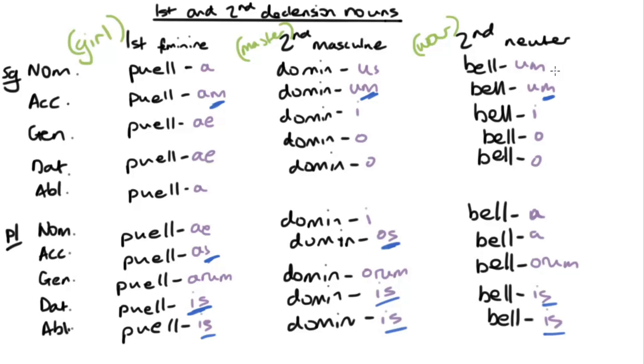So one thing to point out about this is that in black, I've just got the stem. So let's take this first declension noun. Puel- is the stem, and then onto the stem, you add the ending. So just like verbs, you get your stem, and then onto that stem, you add your endings. And here I've included the hyphen just to distinguish the stem from the ending. But of course, you wouldn't write that hyphen in the actual Latin.